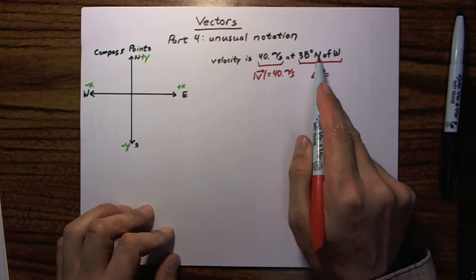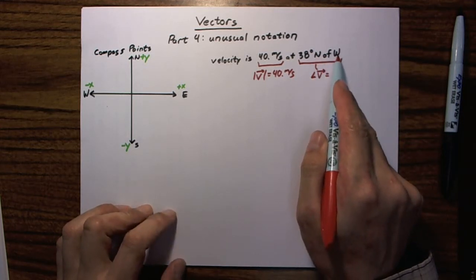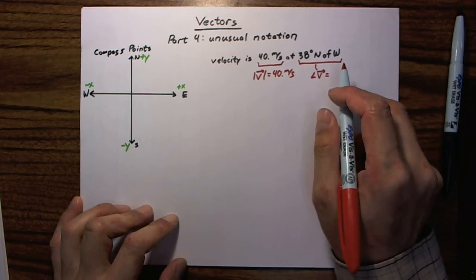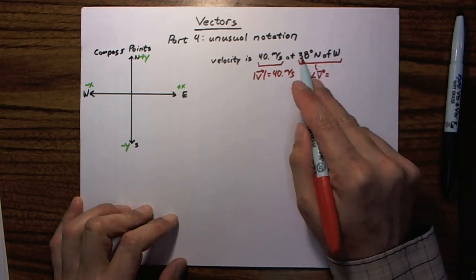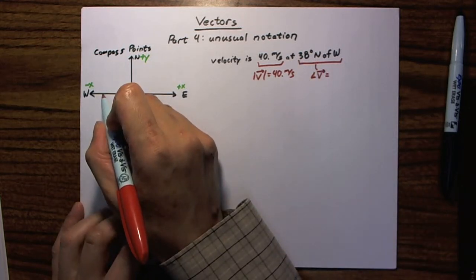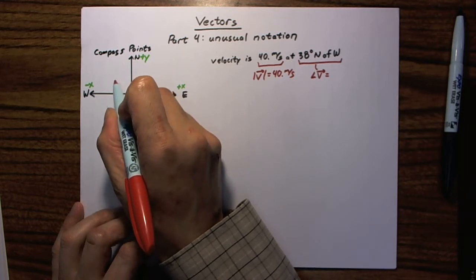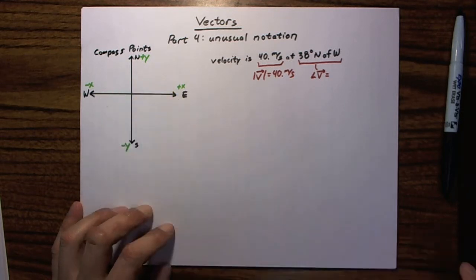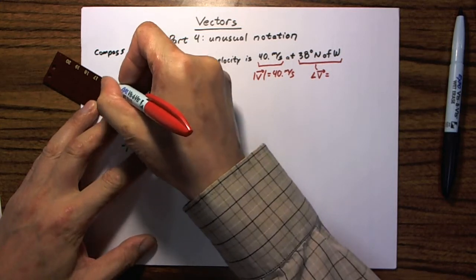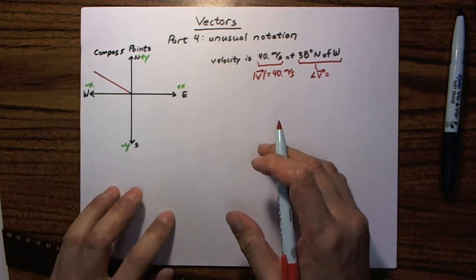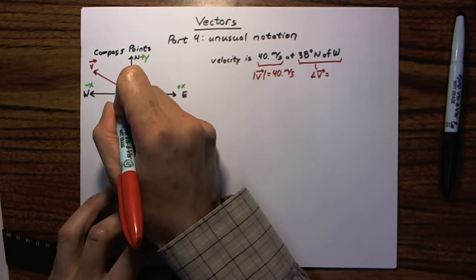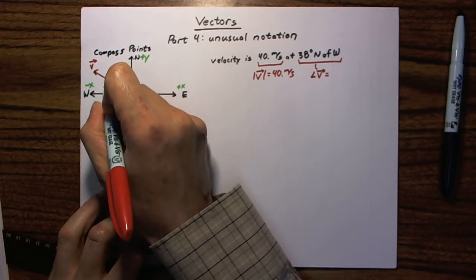The key to reading this sort of notation, where you have degrees, one of the cardinal directions, of, and another one of the cardinal directions, the key is to actually read it backwards. Because what it really means, 38 degrees north of west, what that really means is you start in the western direction, and you rotate towards the northern direction, 38 degrees. So, we start with west, we rotate towards north, and that rotation is a 38 degree rotation. So, our velocity vector is going to point roughly in that direction, and this angle down here is 38 degrees.